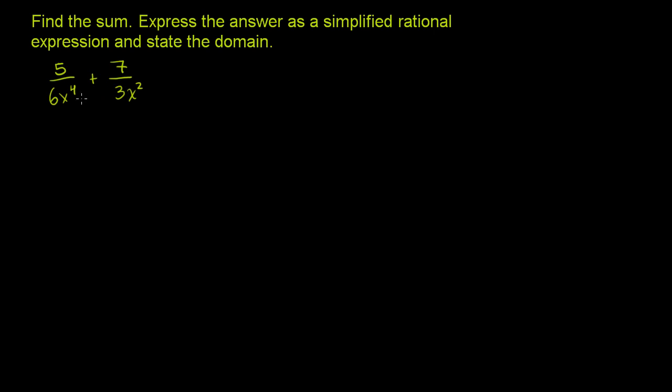So we have these two rational expressions, or two fractions. Whenever we add fractions, we need to find a common denominator. The common denominator has to be something that's divisible by both of these denominators. In general, we want to find the least common multiple of these numbers, or the smallest number that's divisible by both.